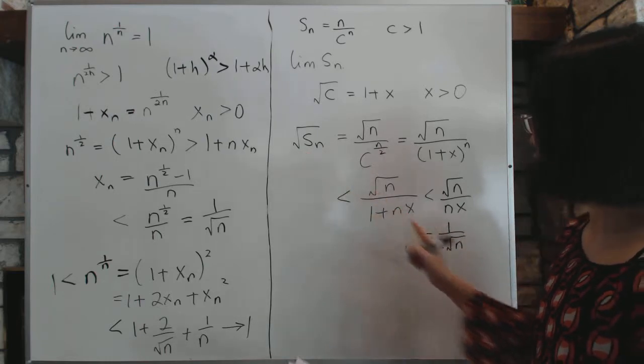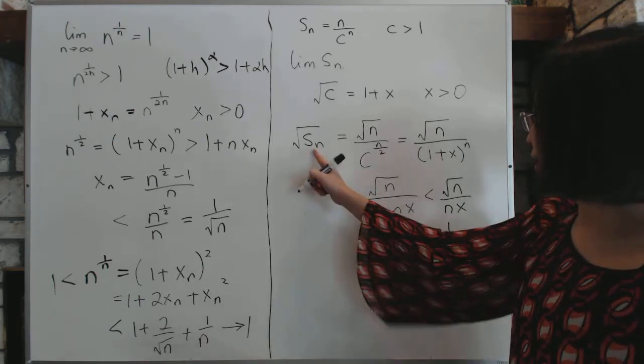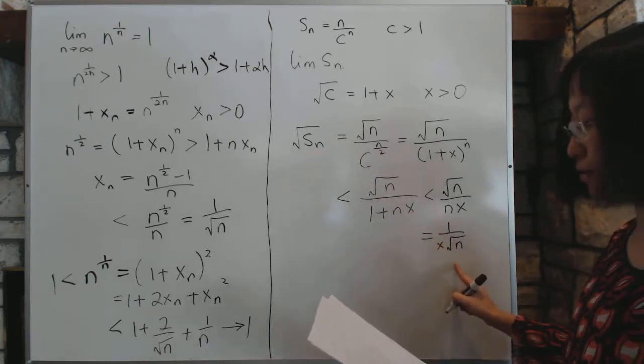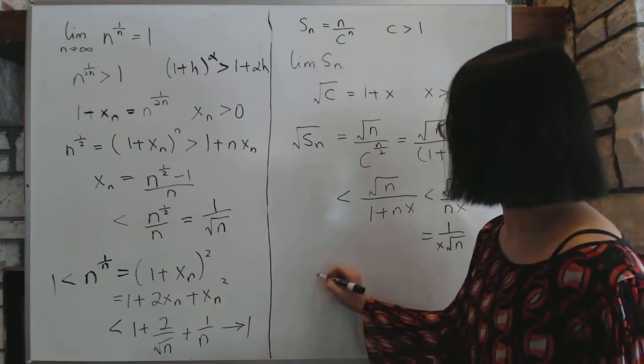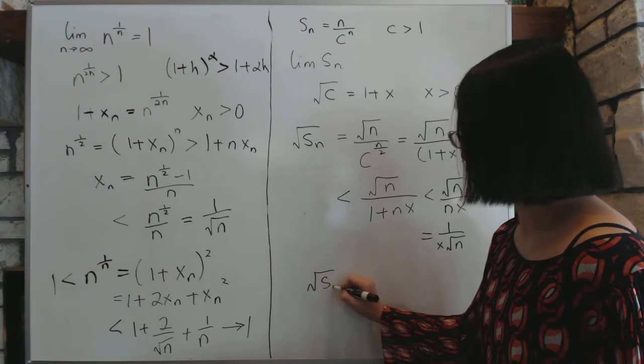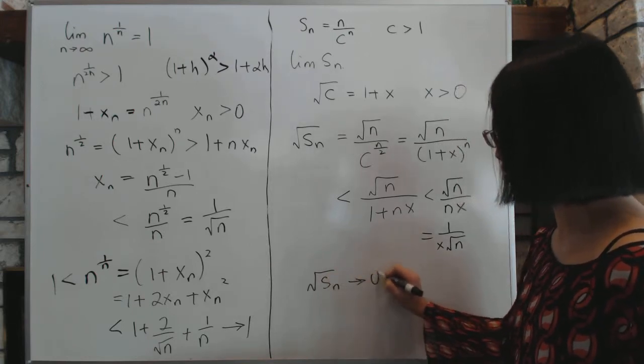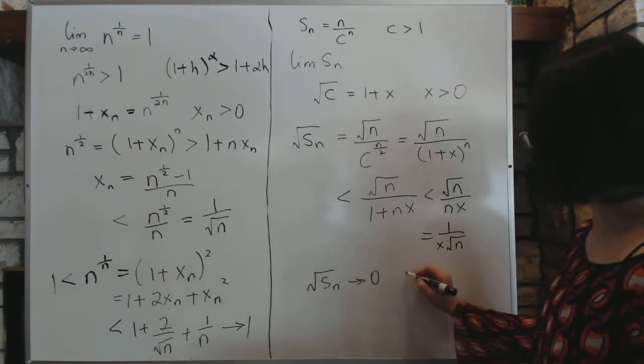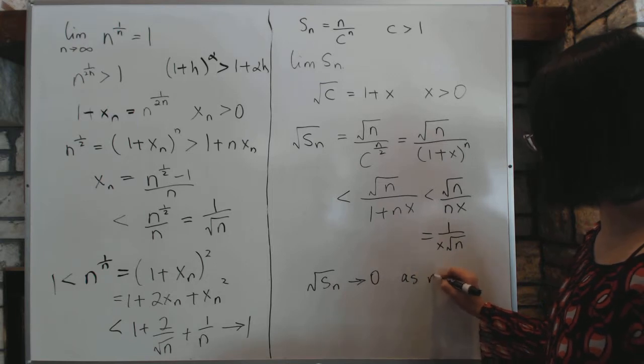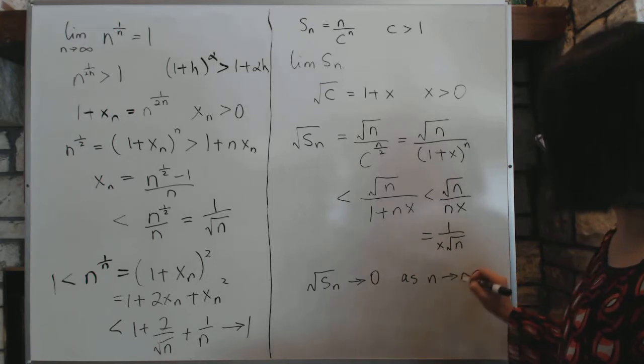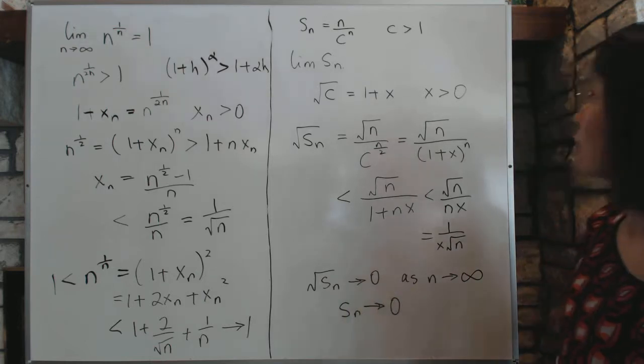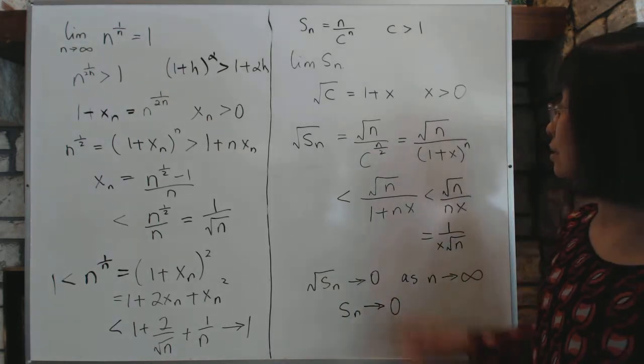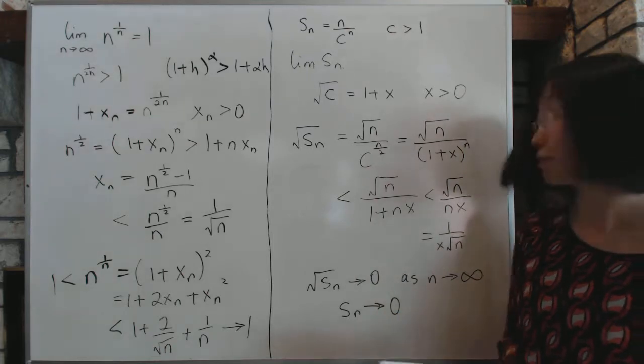So the whole thing comes down to is that Sn is bounded by this particular value, which means that the square root of Sn will go to 0 as n goes to infinity, which then means Sn itself must also go to 0 as well. And that concludes our proof. That is, the limit of Sn is 0.